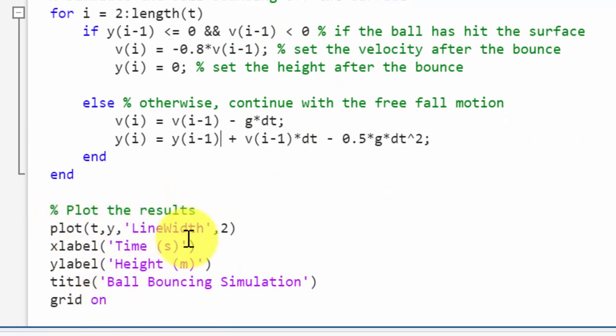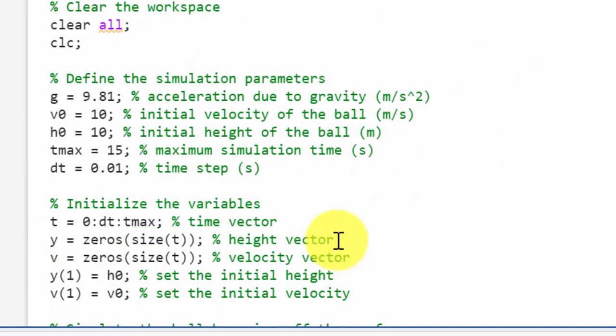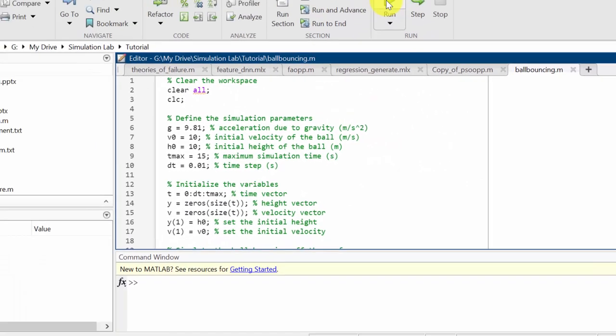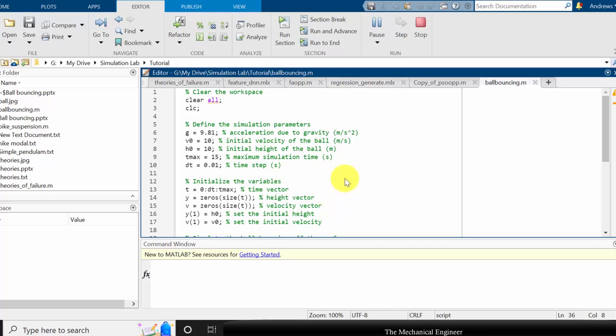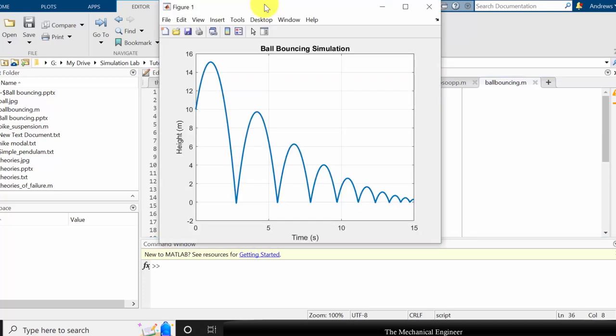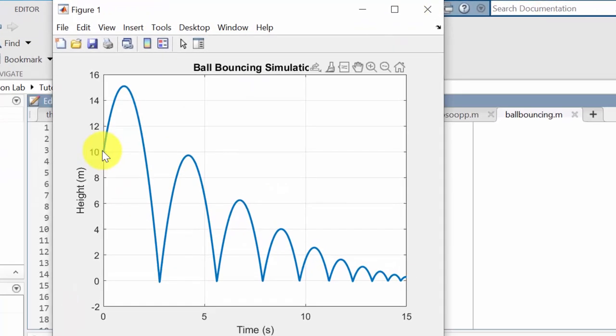Then I have plotted the results and provided a title and switched on the grid. Now we will simulate this. You can see that from 10 meters it starts and it goes up, then it hits. In this period the restitution equation will be used, and in the remaining position the kinematic equations will be used. The simulation is created for a maximum of 15 seconds.